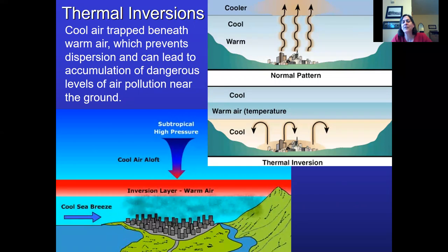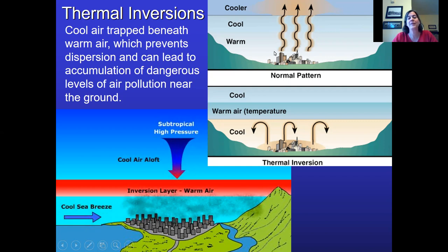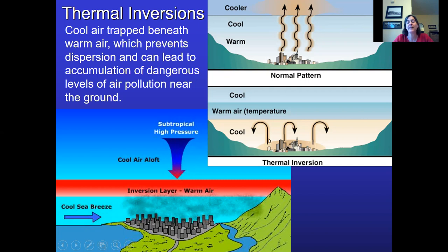Finally, thermal inversions. In a normal situation, the earth heats up the air — the sun heats the earth, the earth re-radiates that heat into the air, so the warmest air is closest to the ground. Warm air is less dense than cool air, so it rises and carries pollutants with it, which then get blown somewhere else. During an inversion, we have cooler air down at the surface — a stable situation since cool air is more dense and won't rise. That air stays at the surface and holds all those pollutants down with it.